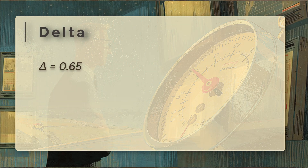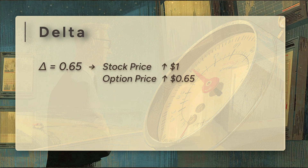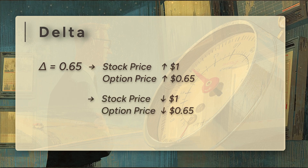If you have a call option with a delta of 0.65, it means for every $1 the stock goes up, the option's price will go up by about $0.65. If the stock drops $1, the option's price will drop by about $0.65. This isn't a guess, it's math, and the market takes it seriously.